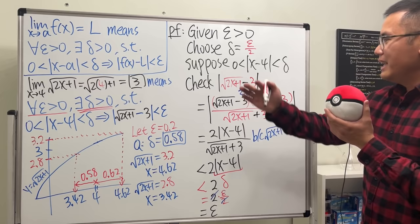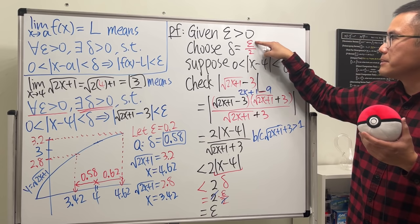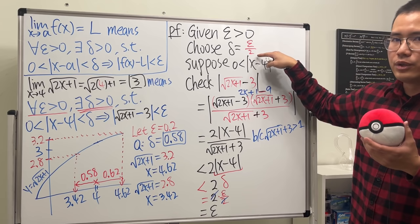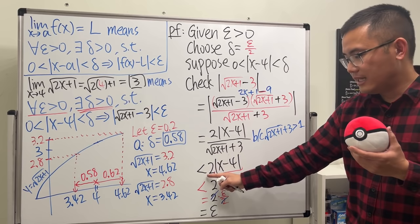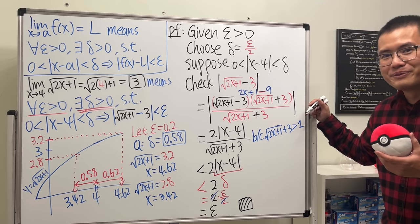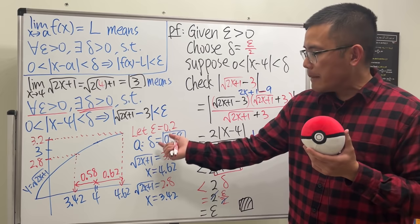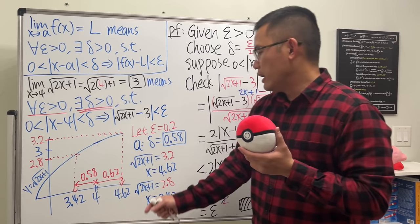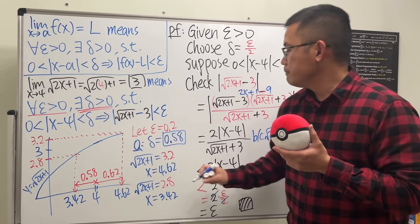Reading the complete proof: given epsilon greater than zero, we found delta equals epsilon over 2, which is greater than zero since epsilon is positive. If the condition |x - 4| < delta holds, then the absolute value of sqrt(2x+1) minus 3 is less than epsilon. We're done — box and shade it. Now, earlier with actual epsilon = 0.2, the formula gives delta = 0.1, whereas graphically we found 0.58.